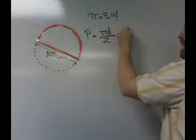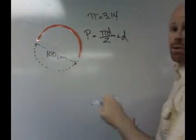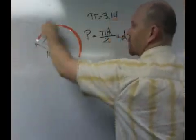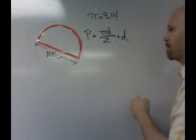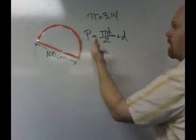But then we have to add in the diameter because otherwise we'd only be finding this curvy part, and we also need to include in our perimeter this straight line. So there's the formula. Now let's do it.